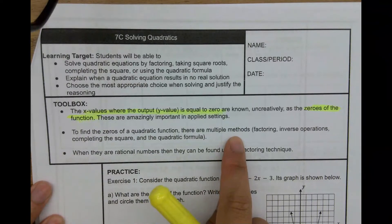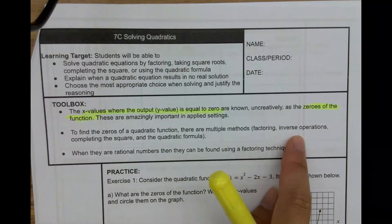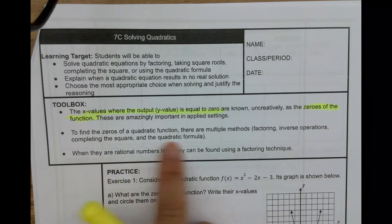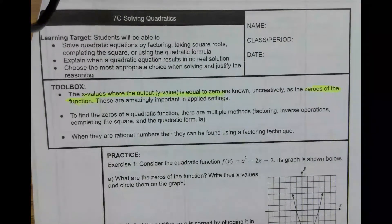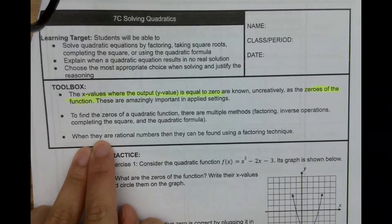So today we're going to do factoring, and then next time we're going to do inverse operations. After that, we're going to do completing the square, which we saw before, and then the last method is the quadratic formula. So the method we are going to learn today is by factoring — we're going to review factoring again. When our solutions, or our zeros, are rational numbers,